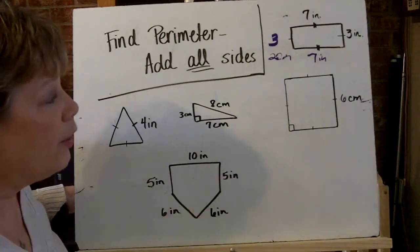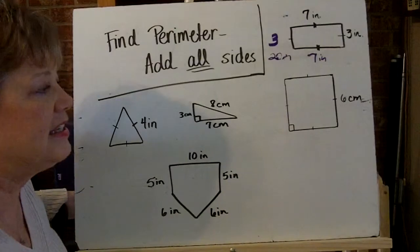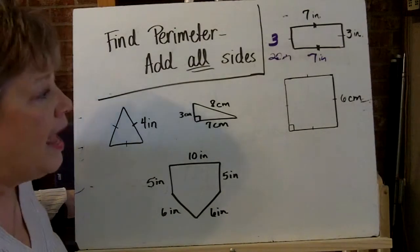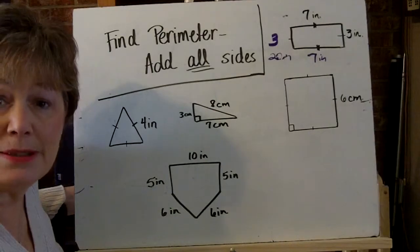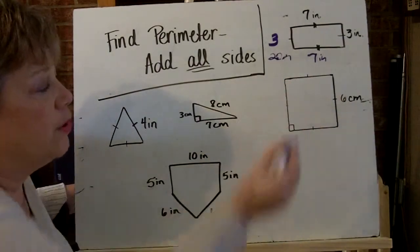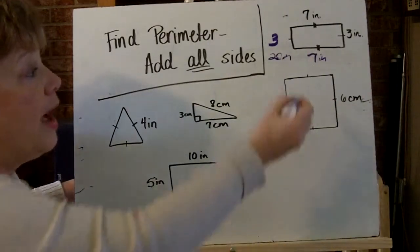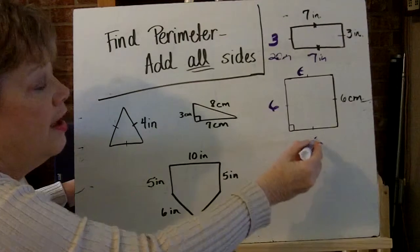If we look at the square below it, it says that the side is six centimeters. And because it's a square, all the sides must be the same. And I've got my little single dash marks to show me that also. So I could have six on all the sides of a square.